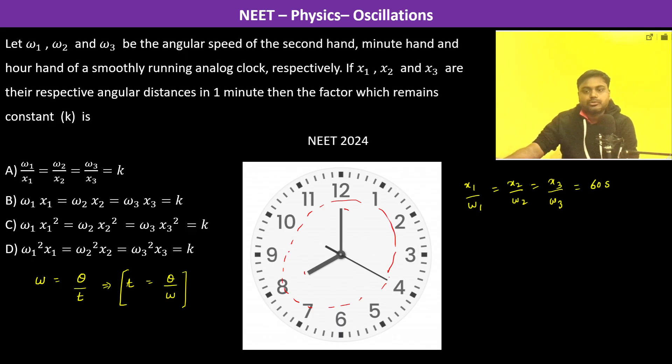So this is constant for all. Now here the reciprocal is mentioned, so that is also going to be constant. Therefore the reciprocal omega1/theta1 is equal to omega2/theta2 is equal to omega3/theta3, which is 1 upon 60. So this is also constant. Therefore option A. Thank you.